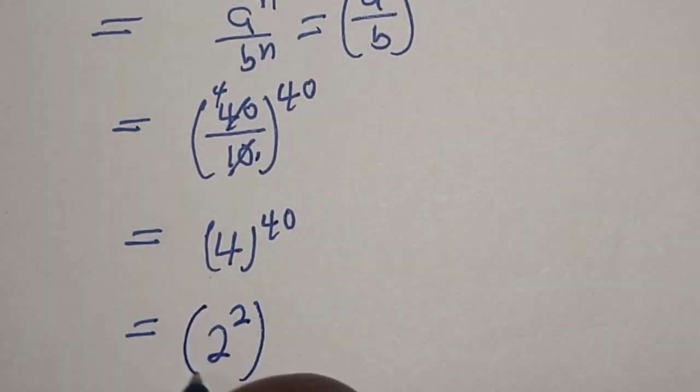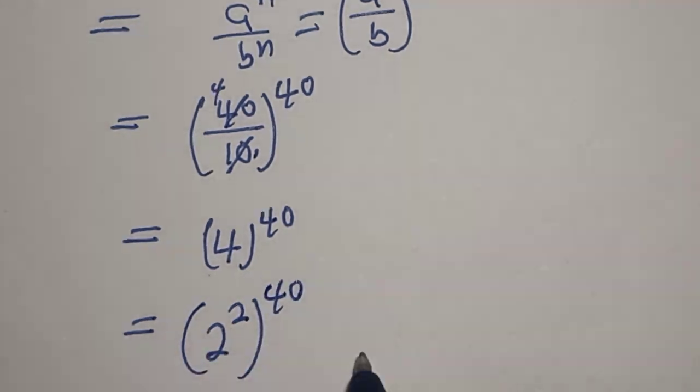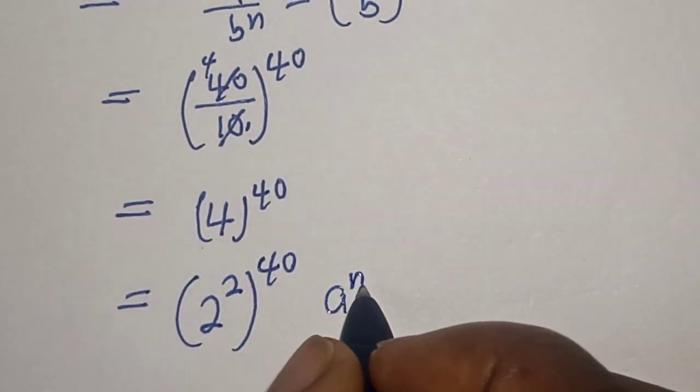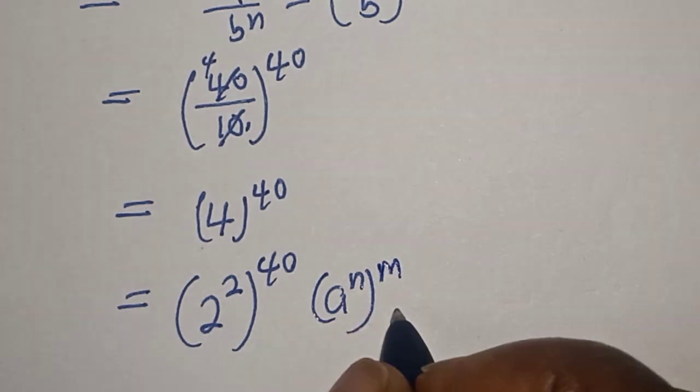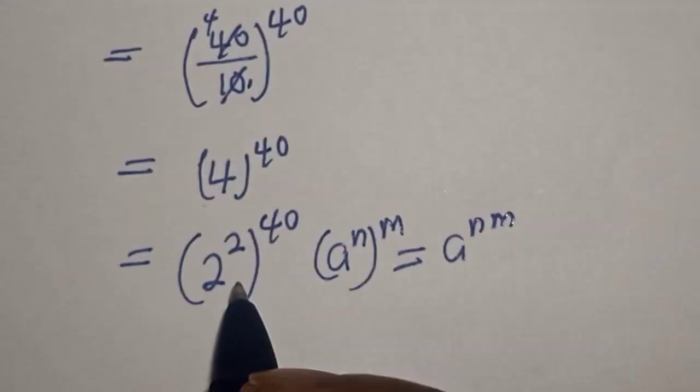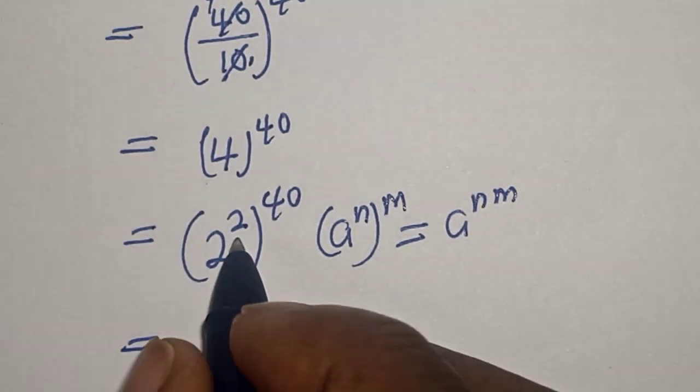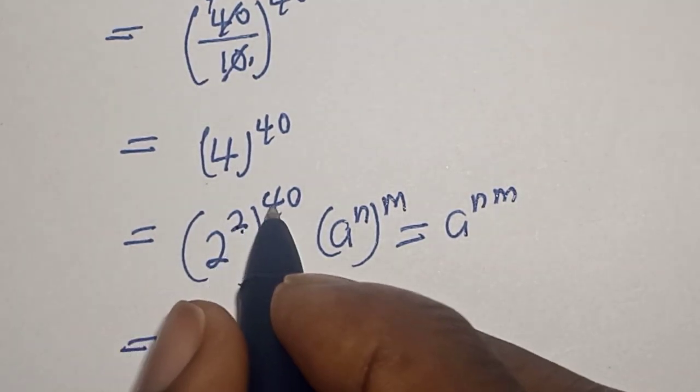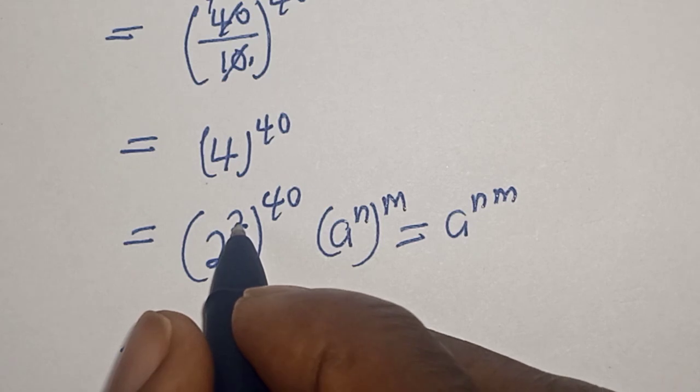2 squared raised to power 40. And don't forget the rule that a raised to power n to the m is equal to a to the power n times m. Therefore we have 2 to the power of 2 times 40,